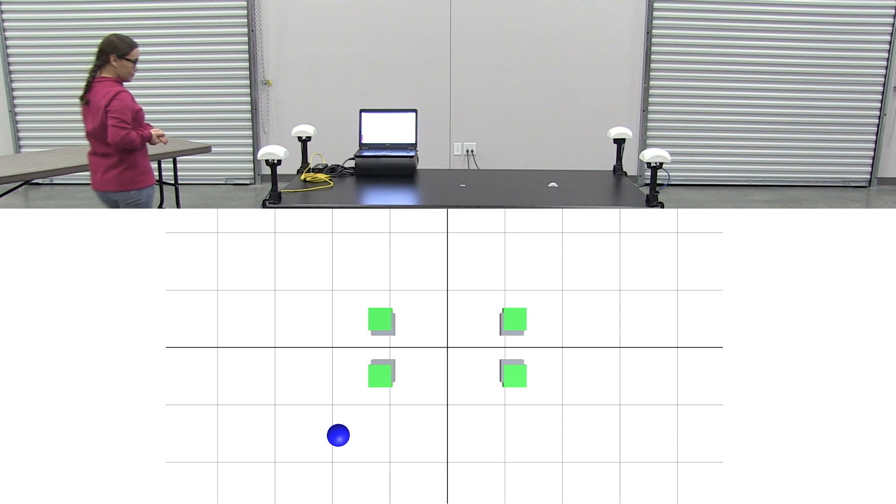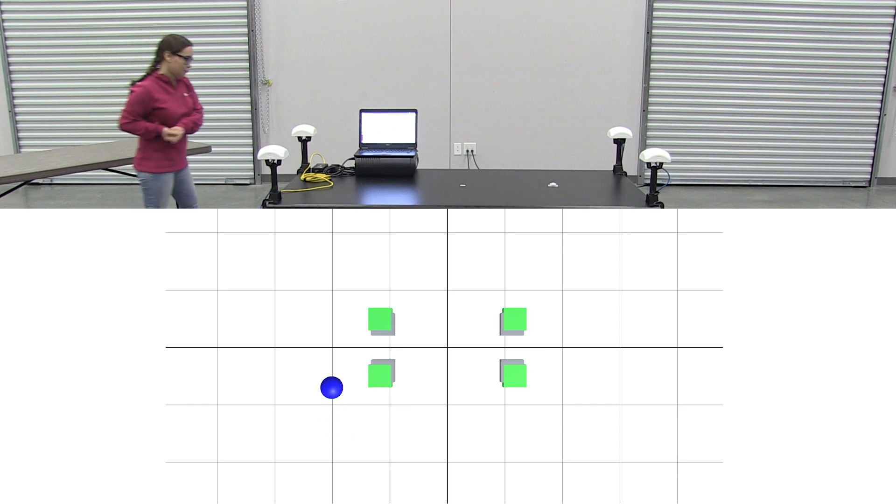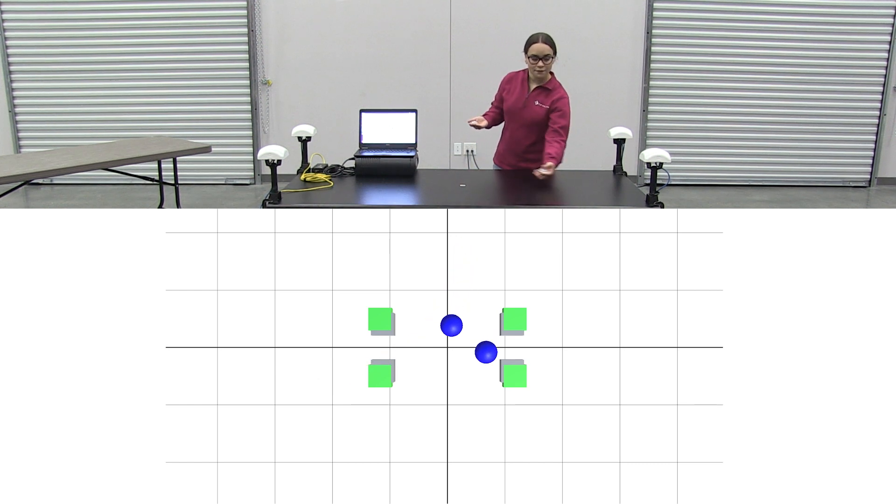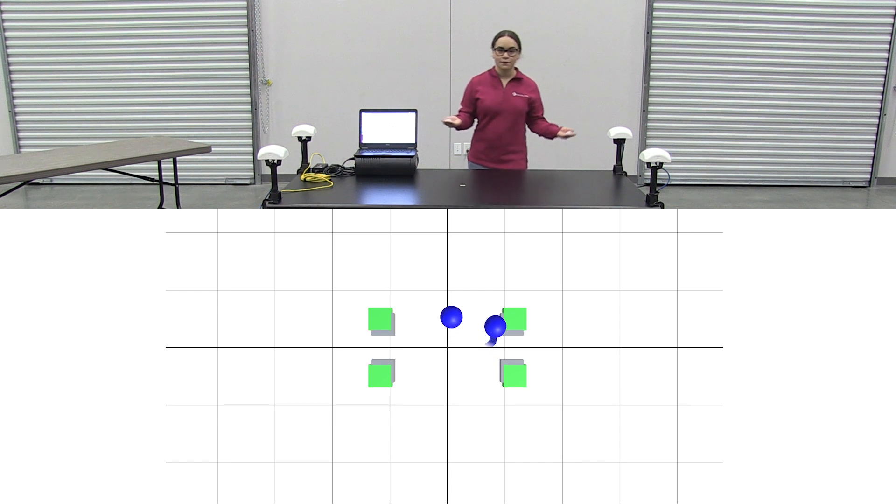As with all RF systems, line-of-sight blockages between tags and anchors can disrupt the solution calculation. But additional tags or anchors can often be used to mitigate the effect.